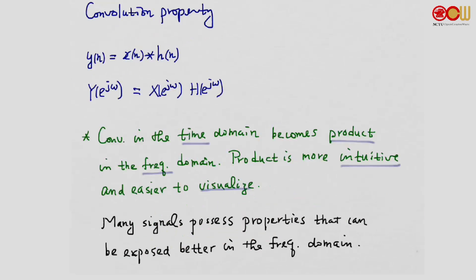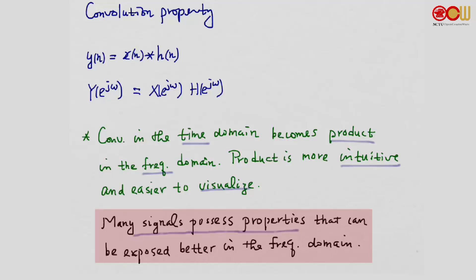Another reason is that in many applications, signals possess properties that can be exposed better in the frequency domain. It's hard to detect these properties in the time domain, but it's very easy to see and visualize them in the frequency domain.